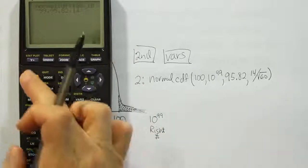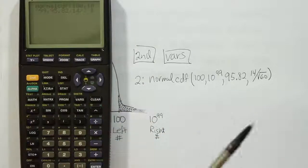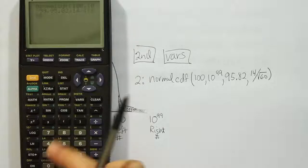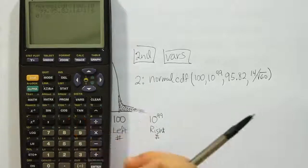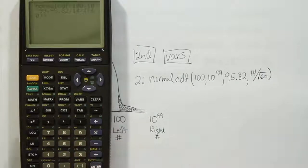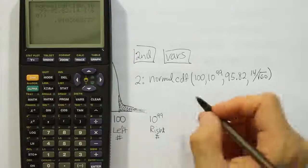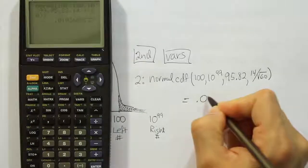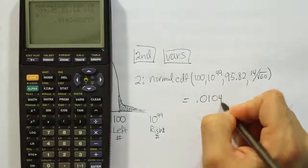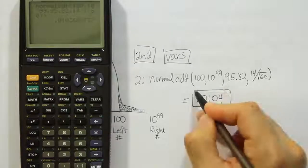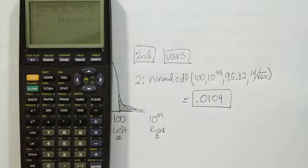Comma the standard deviation which is 14 divided by, then we have to enter the square root so I'm going to hit second, the square root key, type 60, close it up, close the parenthesis finally at the end for the overall statement, hit enter and we finally get the answer of 0.0104. So only about a 1% chance of that happening. That's it.